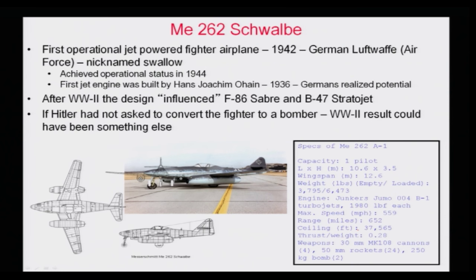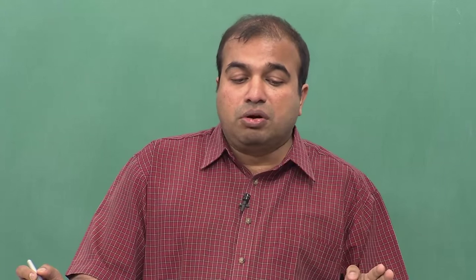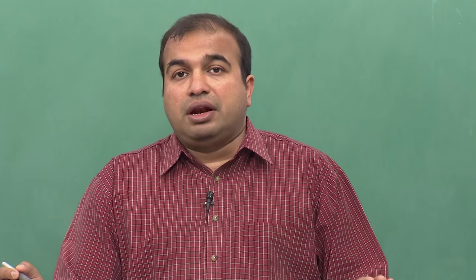The Messerschmitt Me 262 Schwalbe is an important aircraft and the predecessor of many fighter aircraft in the world. This is the first operational jet-powered aircraft. Up to this point, we were talking about piston engines and then turboprops. The jet engine was built by Hans von Ohain in 1936, and the Germans were the first to realize its potential. This was the aircraft where jet engines were first integrated. It achieved operational status in 1944, and its nickname is 'Swallow.' People still say that if this aircraft had fully materialized as designed, the result of World War II would have been different.